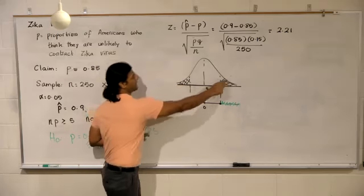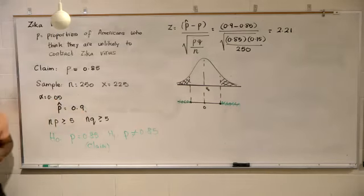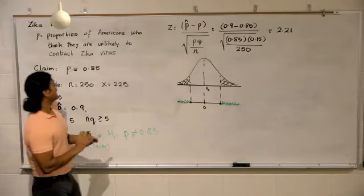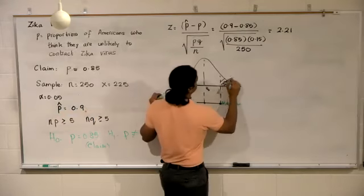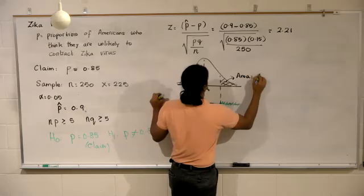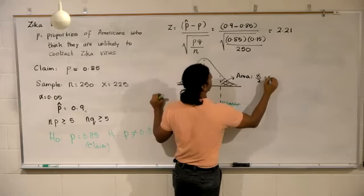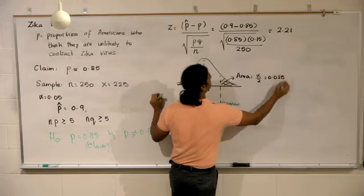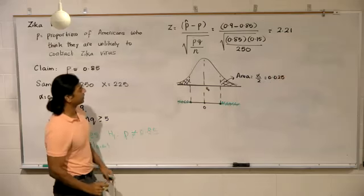What is the area under the curve, the shaded area? Alpha over 2. So in this case, alpha is 0.05. So 0.05 divided by 2 is 0.025.